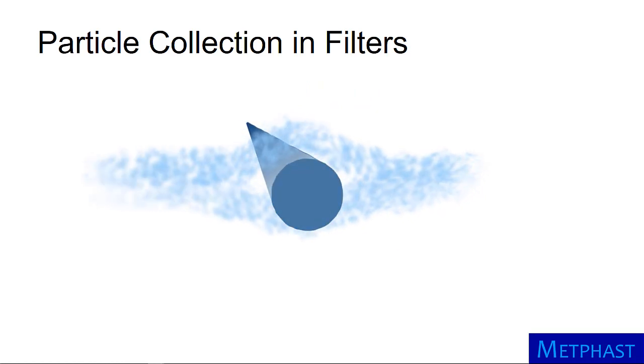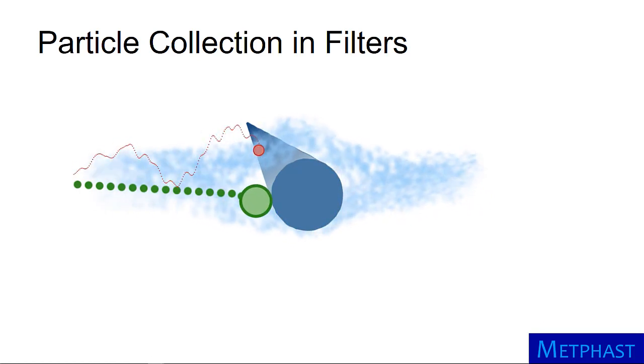Large particles, depicted in green, have a high probability of hitting the fiber due to inertia. Small particles in red also have a high probability of hitting due to Brownian motion.